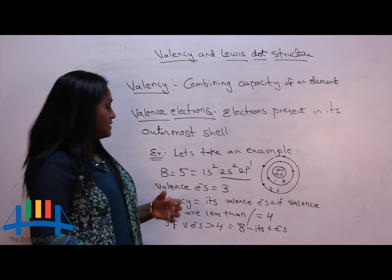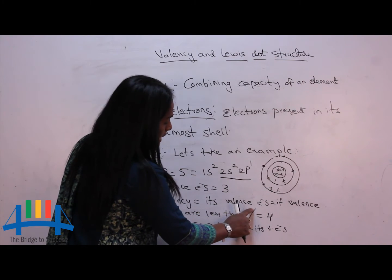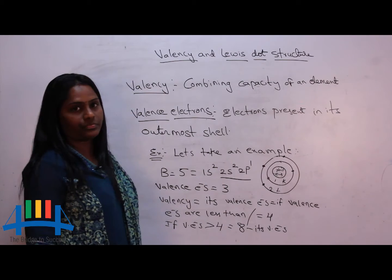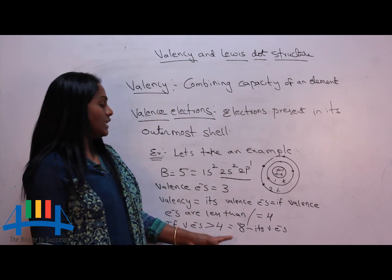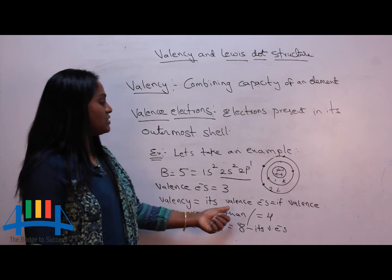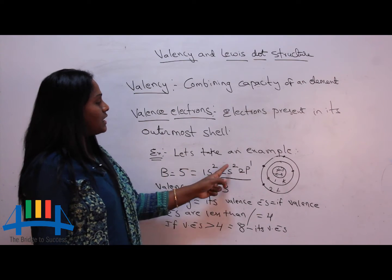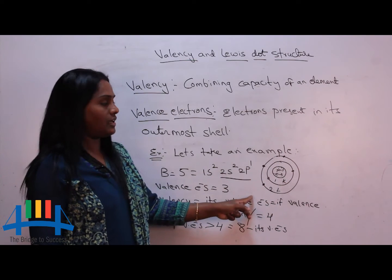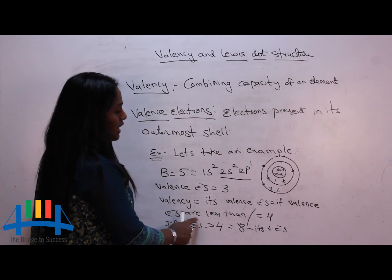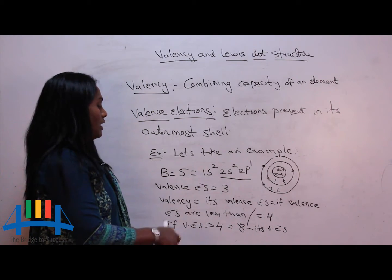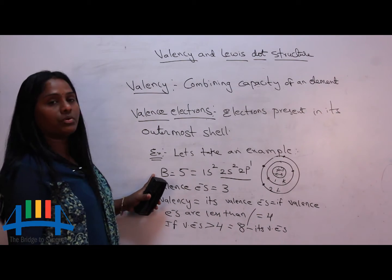If I want to find the valency of boron, the formula is: valency equals its valence electrons, if valence electrons are less than 4. Valence electrons for boron are 3, which is less than 4, so valency equals valence electrons. Valency is combining capacity; valence electrons are electrons in the outermost shell. Since boron has 3 valence electrons, which is less than 4, valency of boron is 3.